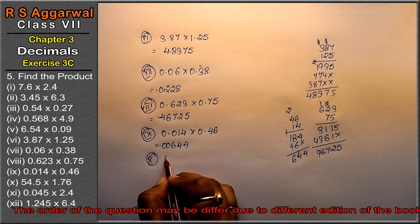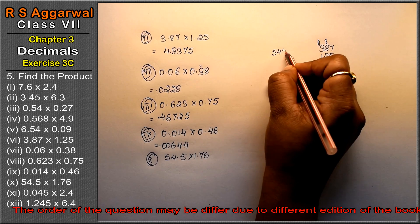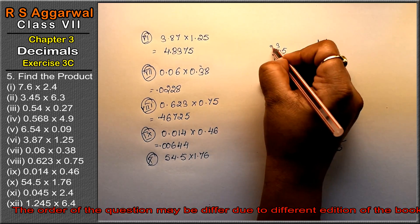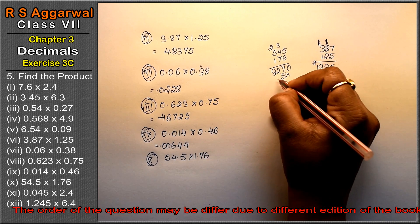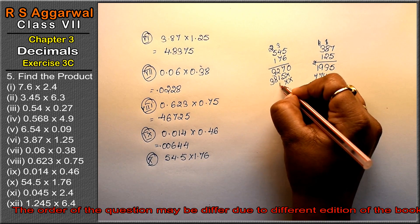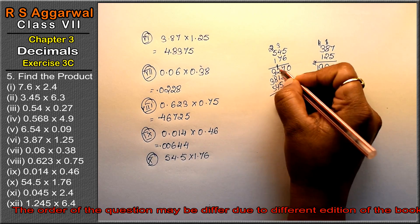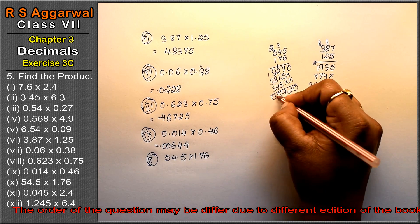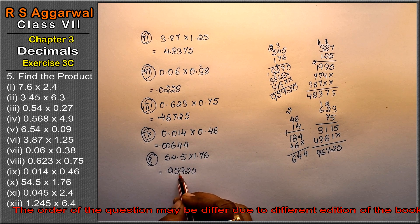Let's do tenth part: 54.5 into 1.76. Multiply 545 by 176. 6 times 5 is 30, continue for first row. Then 7 times gives second row. Then 1 times for third row. Add all with carrying: 95920. Point: 1 plus 2 is 3 decimal places. After 3 digits from right, point comes: 95.920 is the answer.